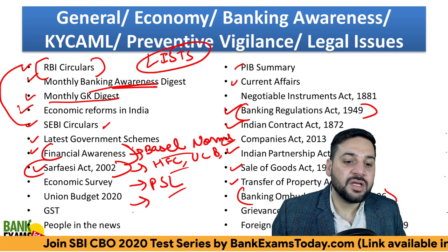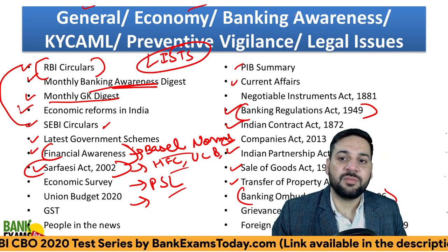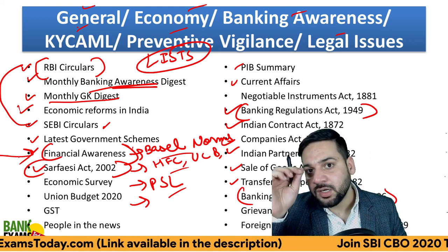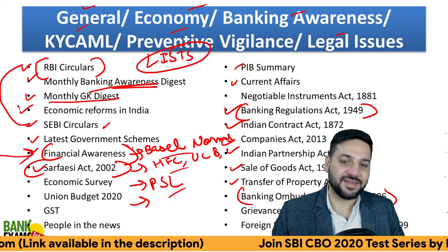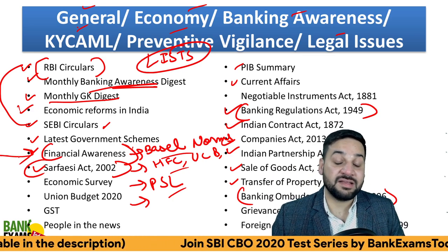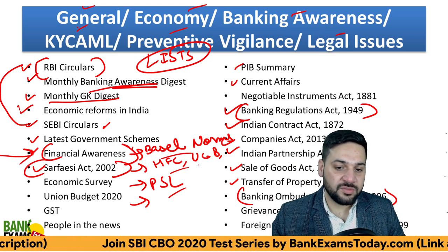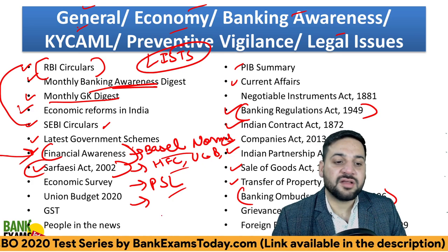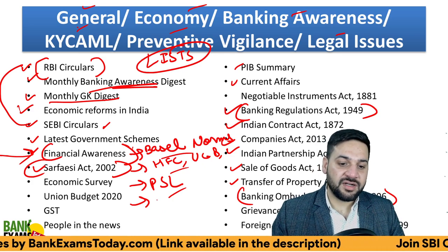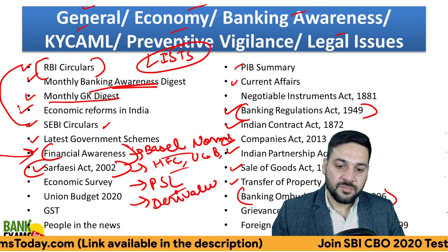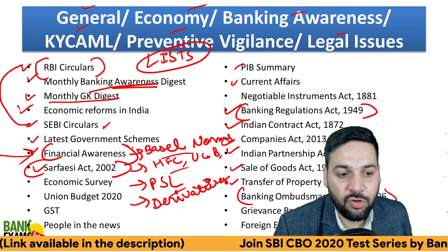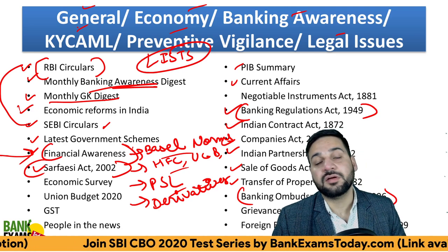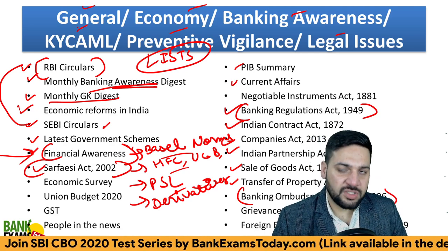Derivatives are an important topic and are covered under financial awareness. All those Basel norms, HFC, UCB, PSL norms, Kisan Credit Card, government schemes, and the latest products — all are covered under financial awareness. RBI circulars are themselves a lengthy topic. The last six months of RBI circulars need to be covered.